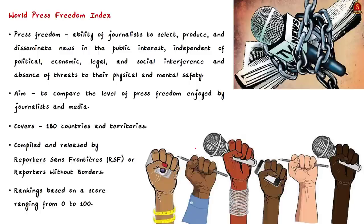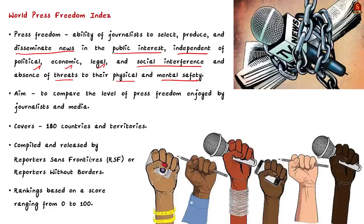The index is about press freedom — defined as the ability of journalists to select, produce and disseminate news in the public interest. Such ability should be independent of political interference, economic interference, legal and social interference, and there should also be absence of threats to the physical and mental safety of journalists. When all these criteria are satisfied, we say a country has freedom of press.